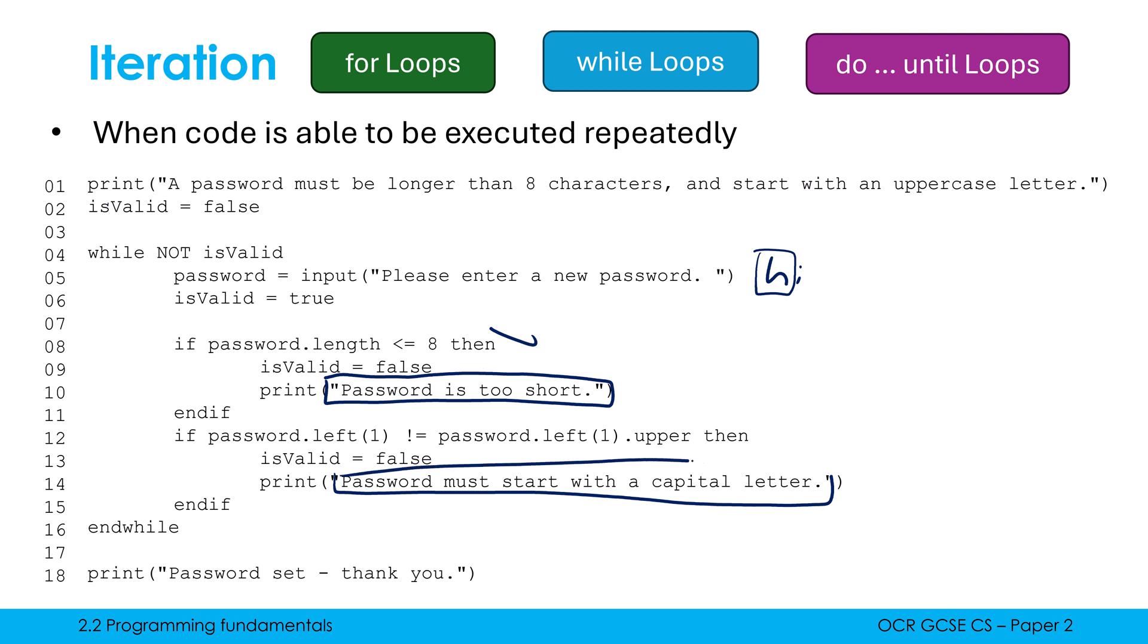And because only one of these had to be false for it to repeat again, but it turns out both are false, therefore isValid remains false, therefore not isValid remains true. So in this case, we would loop again, and we would repeat the code within the while loop.